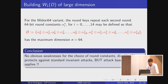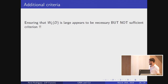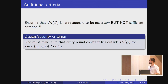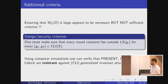Round constants should be selected carefully, not just randomly, to avoid obvious weaknesses. The main conclusion is that the BCLR criterion appears not to be optimal. A stronger design criterion is: ensure that every round constant is selected outside the linear structure of all closed-loop invariants. This can potentially be relaxed, but more work is needed. Using computer simulations, PRESENT, PRINCE, and L-BLOCK were all verified to be resistant against this kind of attack.